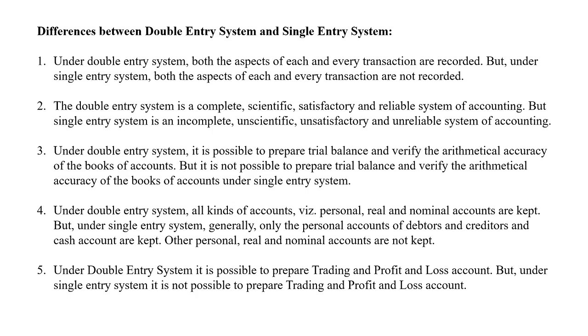The fourth difference: under the double entry system, all kinds of accounts — that is, personal, real and nominal accounts — are kept. But under the single entry system, generally only the personal accounts of debtors and creditors and cash accounts are kept.